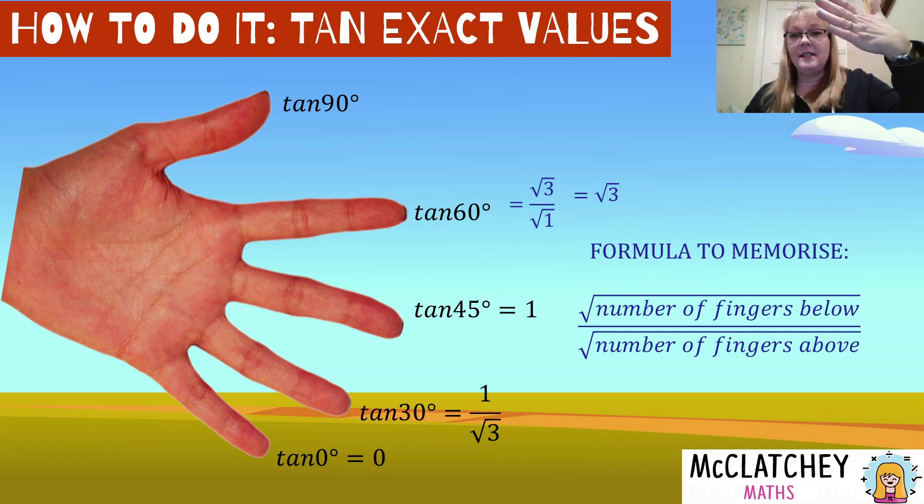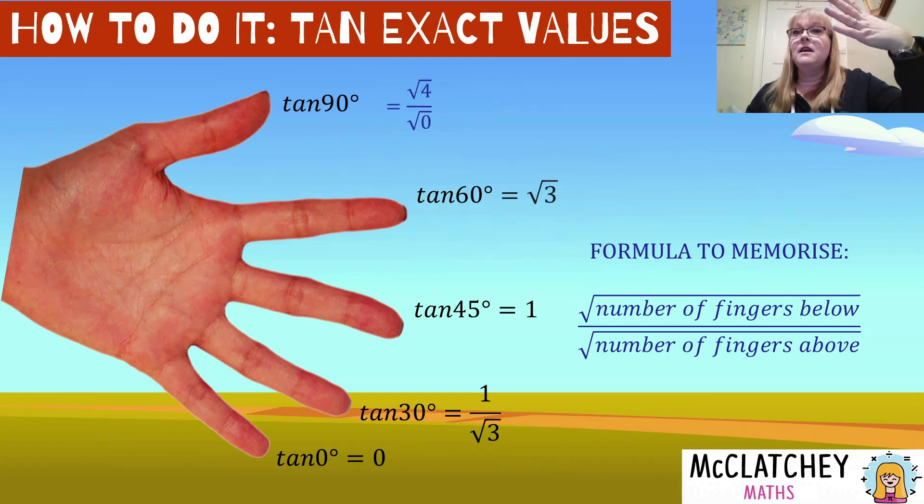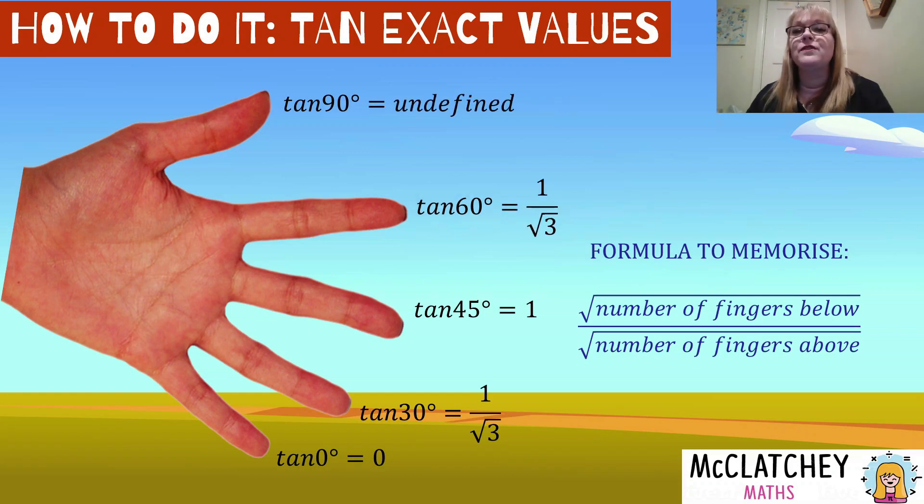And the last one is tan 90. If I hold my thumb down now, I've got four fingers below. So that's going to be the square root of four. And I've got no fingers above. So that's going to be root four over root zero. And we know we cannot do a division divided by zero. So that means it's going to be an undefined result.